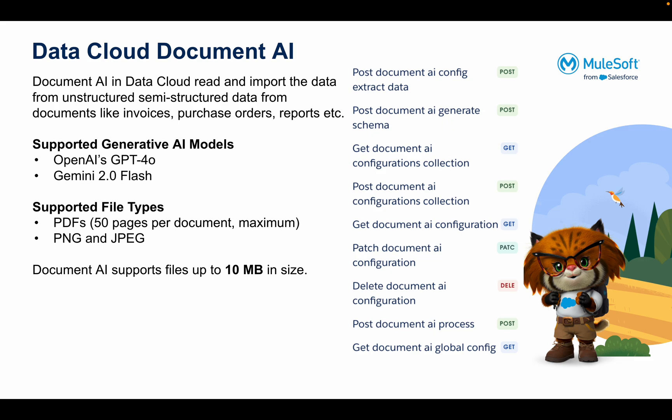Currently it supports two generative AI models for extracting information: OpenAI GPT-4 and Gemini 2.0. There are two file types supported — PDF and image. For PDF it supports up to 50 pages per document maximum, and for images it supports JPEG and PNG. A document size should not exceed 10 MB. It also exposes certain APIs you can use to extract information from the document, generate the schema, or update the document configuration.